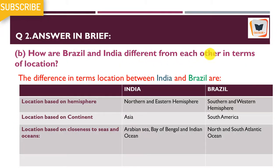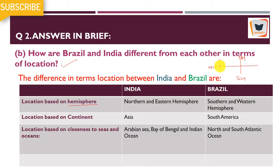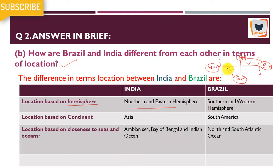How are Brazil and India different from each other in terms of location? You need to make a table with the differences. First, in terms of hemisphere: the northern hemisphere is this whole part, the southern hemisphere is this whole part, western hemisphere is this whole part, and eastern hemisphere is this whole part. India is in the northern hemisphere and eastern hemisphere. Brazil is mainly in the southern hemisphere and western hemisphere. In terms of continent, India is in Asia and Brazil is in South America.